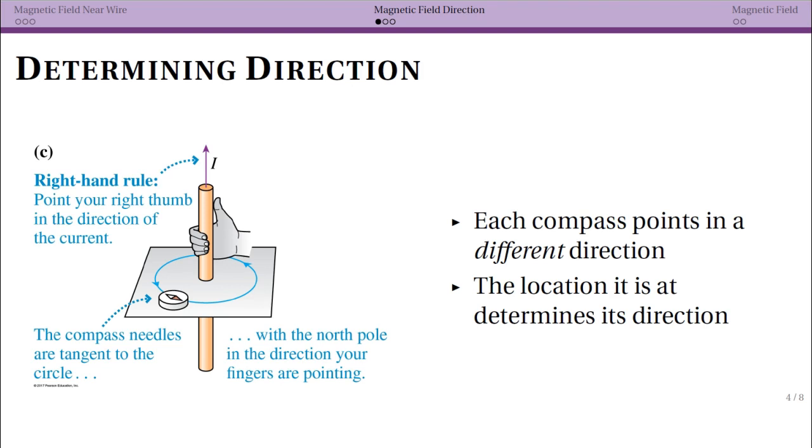And in this case, direction means that we know that if I have a circle here, it's going to be tangent. But then the question is, do you have north going up into the left or down into the right? And the right-hand rule tells you because your fingers are pointing that way, that's the way north is pointing.